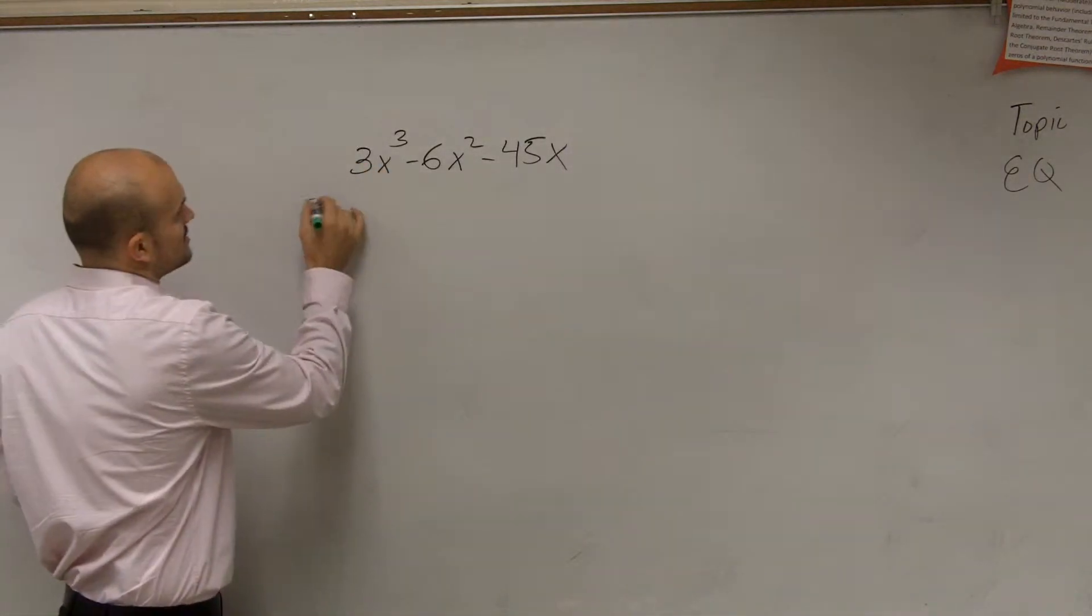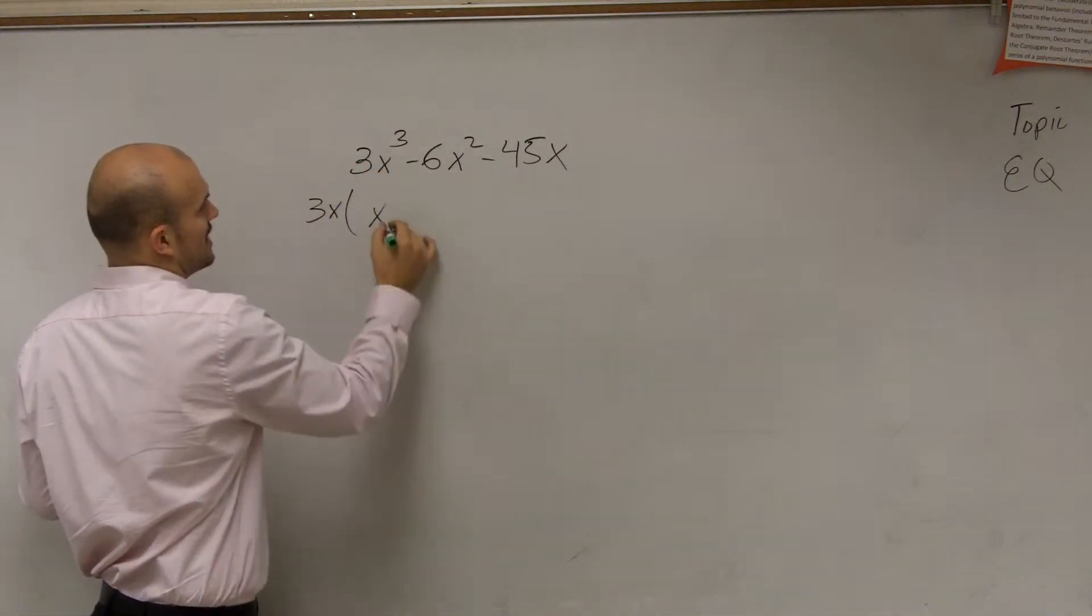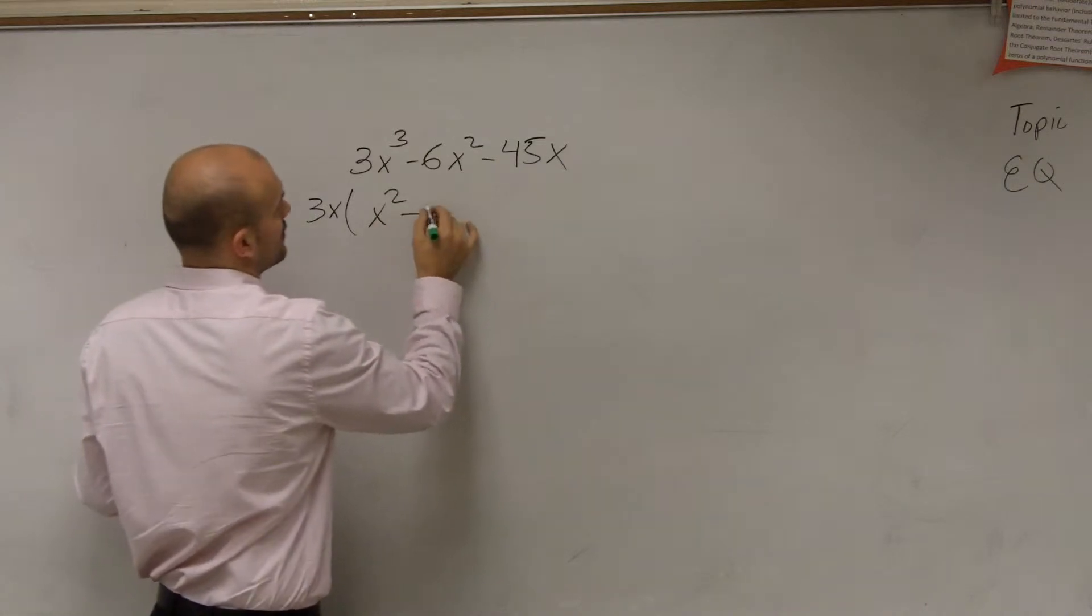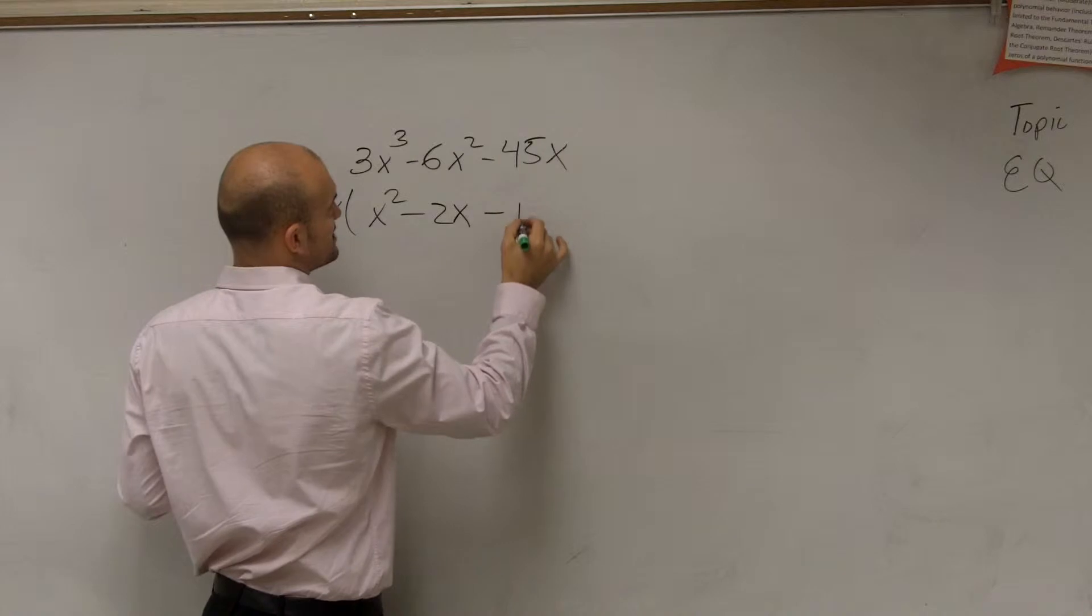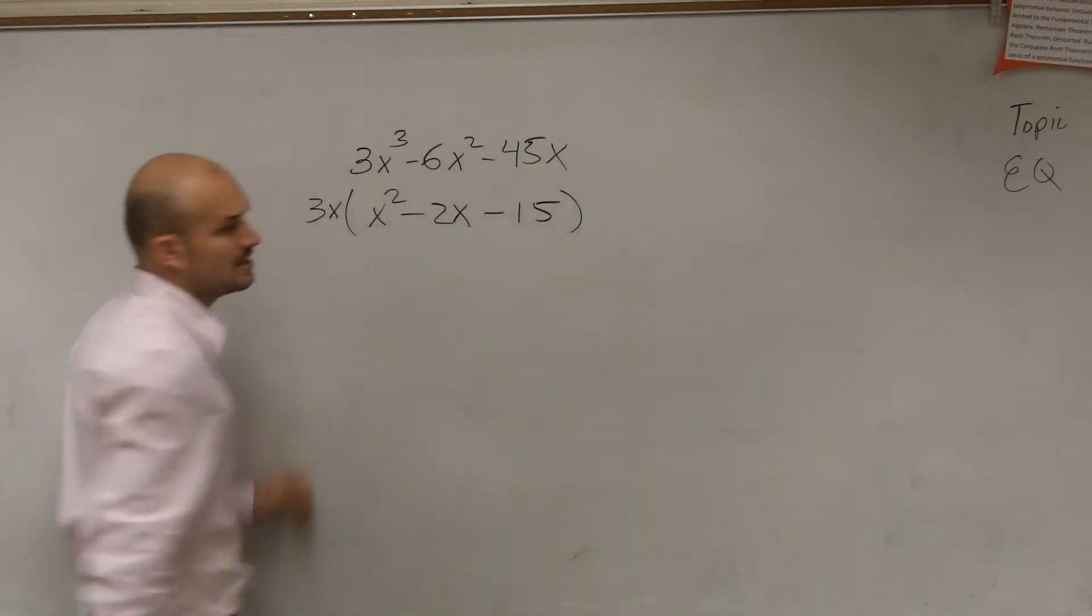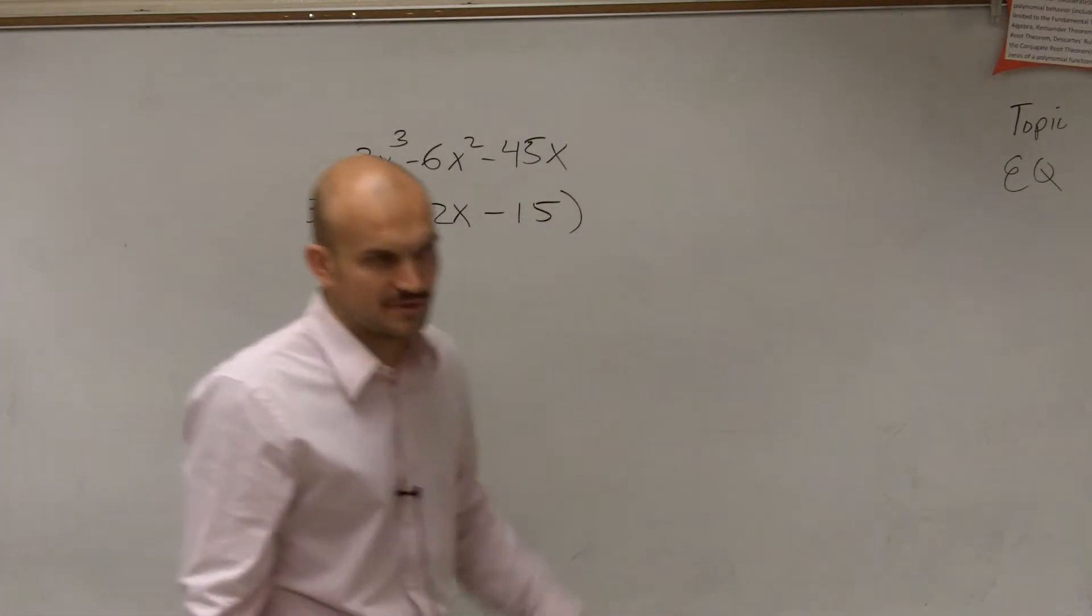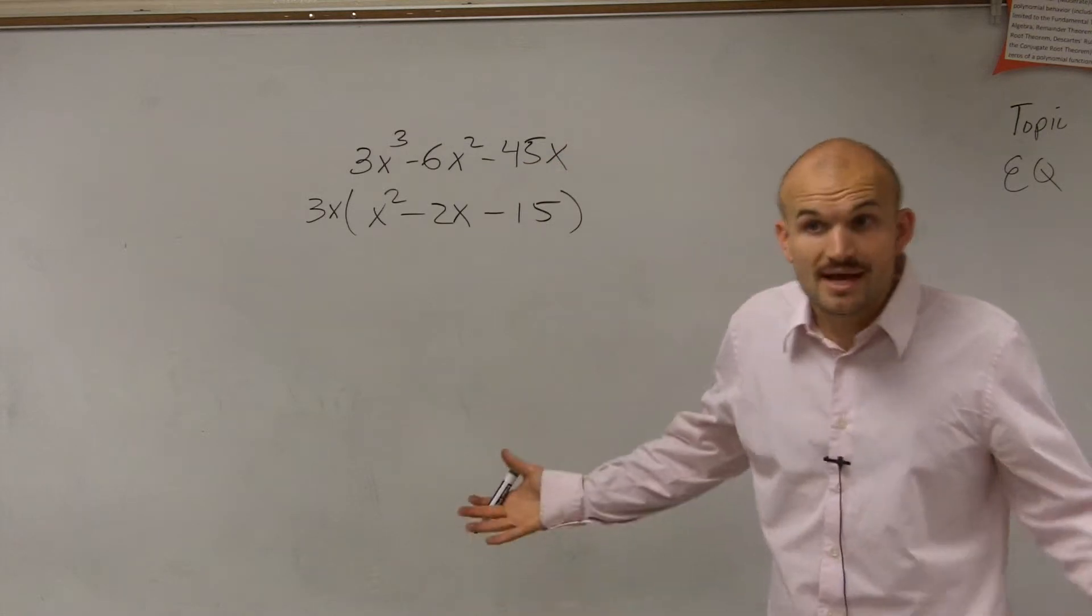So let's factor out a 3x. When I factor out a 3x, I'm left with an x squared minus 2x minus 15. Now, did we write this as a product of two factors? Yeah, we did. Right? Good.